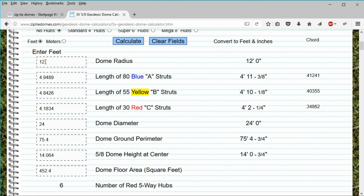Let's look at the other fields on the calculator. The radius of 12 feet is the distance from the center of the dome to the outside edge. The 80 blue struts are the longest struts. On every calculator on our website, the blue struts are always the longest struts.